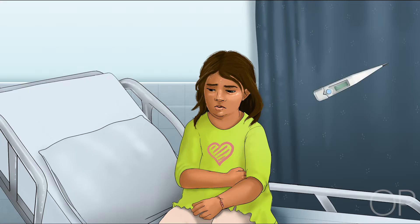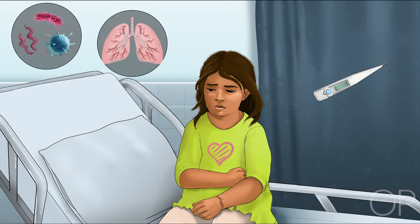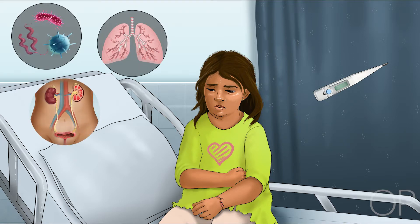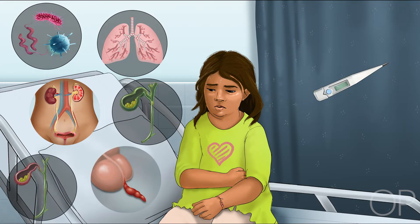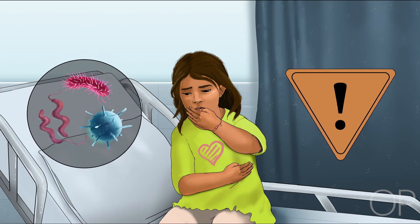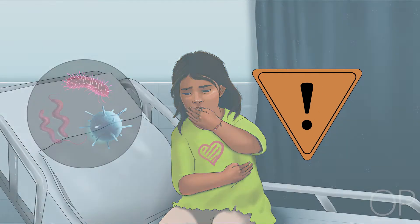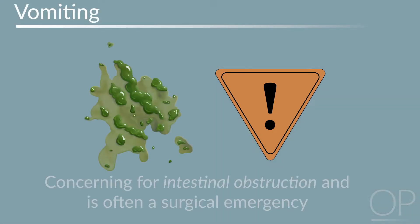For example, fever is associated with infectious or inflammatory etiologies like gastroenteritis, referred pain from pneumonia, pyelonephritis, cholecystitis, cholangitis, and appendicitis. Vomiting may suggest gastroenteritis or serious abdominal pathologies. A careful description of the emesis is helpful. Bilious emesis, elicited by asking about green vomit, is concerning for intestinal obstruction and is often a surgical emergency.